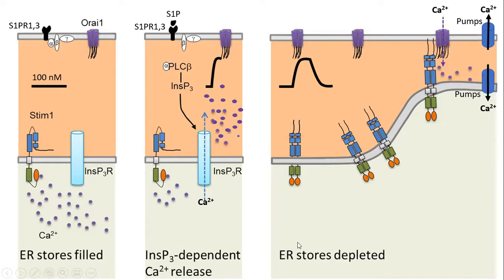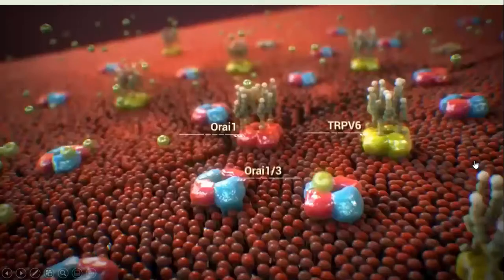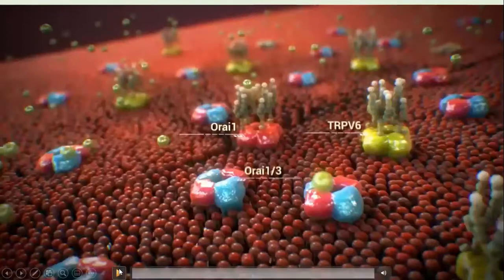When the ER stores are depleted — almost all calcium has been released — this emptiness triggers and activates STIM1. There is a change in its morphology; it forms a tetramer, binds to the ORAI1 channel, and there is an influx of calcium back into the cell. Pumps then help to refill the ER calcium stores.